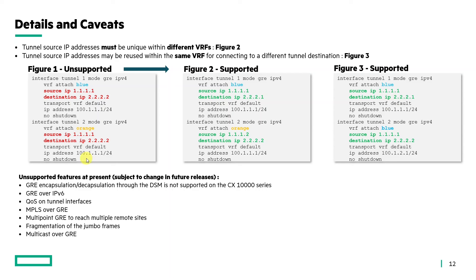For unsupported features at present — subject to change in future releases — GRE encapsulation or decapsulation through the DSM on the CX 10000 series is not supported. GRE over IPv6 is not supported. QoS cannot be enabled on tunnel interfaces. MPLS over GRE is not supported. Multi-point GRE to reach multiple remote sites is not supported, along with fragmentation of jumbo frames and multicast over GRE.